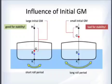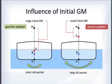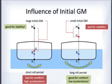A large initial GM gives a short roll period — the ship rolls back and forth rapidly. A small initial GM gives a long roll period.